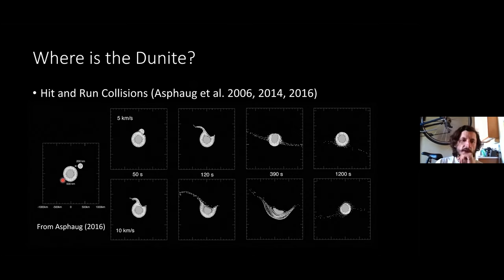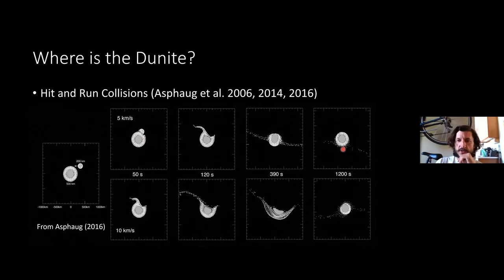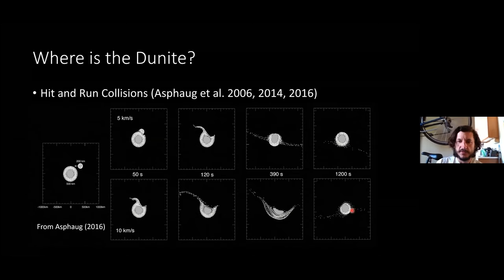At lower speed, the object is able to retain a lot of its mantle and the smaller object is destroyed while the larger reaccretes. But at higher speeds, you get complete stripping away of the mantle material and total destruction of both objects. Asfaug has suggested it's like a coin toss — some planetesimals survive because of the nature of impacts while others have their mantles completely stripped away. Mercury is suggested as an analog of this process, having basically lost most of its mantle.